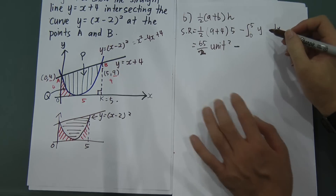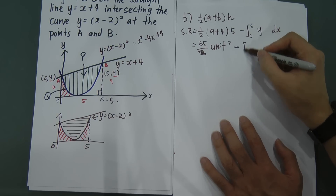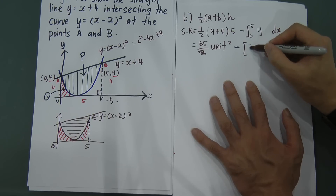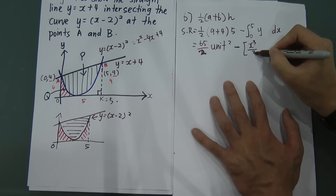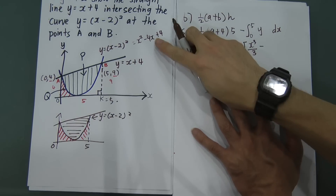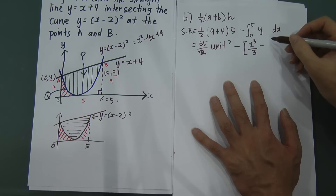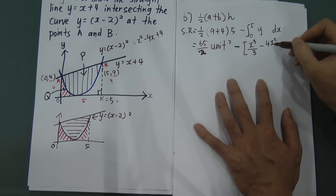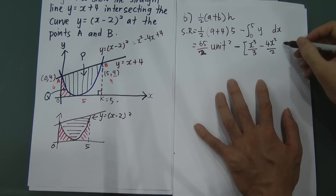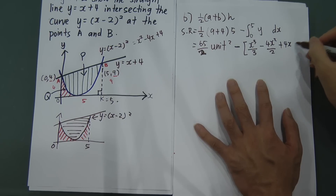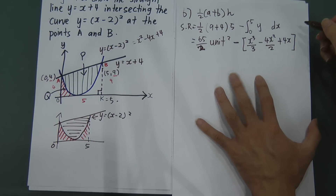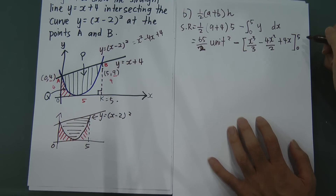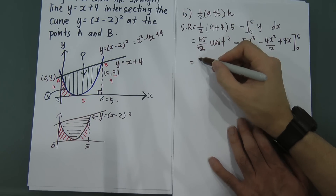So we integrate x squared minus 4x plus 4 from 0 to 5. x squared integrates to x cubed divided by 3, minus 4x integrates to 4x squared divided by 2 — which is 2x squared — and plus 4 integrates to plus 4x. We write the limits 5 and 0. Continuing, we get 65 divided by 2, minus the integral evaluated.